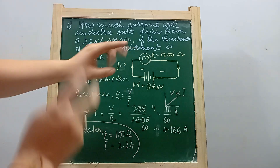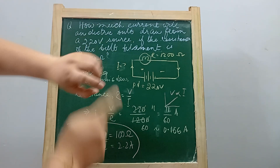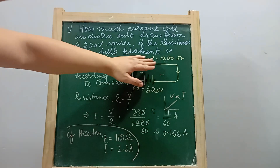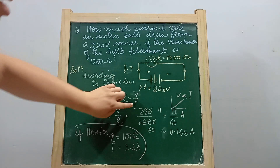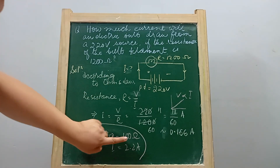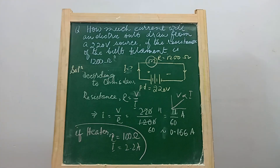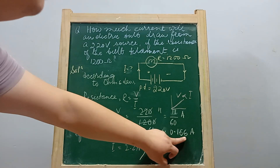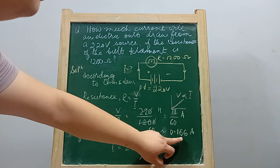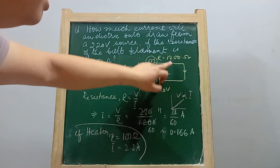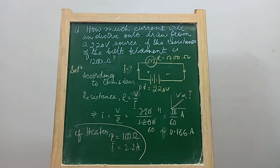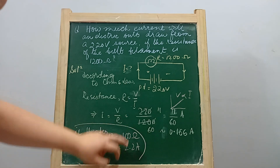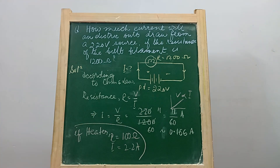What I want you to understand is that resistance is the ratio of the potential difference to the current that flows through it. For a resistance of 1200 ohms, the voltage is 1200 times the current. For a resistance of 100 ohms, the voltage is 100 times the current. I hope you have understood the question.